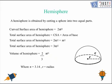Let's look at a hemisphere. A hemisphere is obtained by cutting a sphere into two equal parts. This is a picture of a hemisphere.